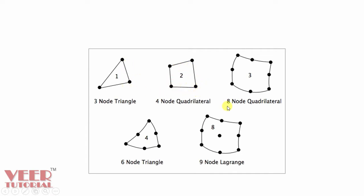We can also create an 8-node quad or a 6-node tria. For the 9-node element, it is called a Lagrange element. In this way, we can define nodes and elements.